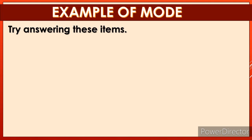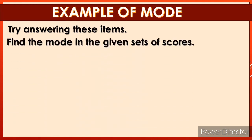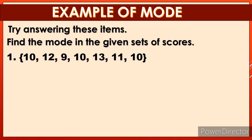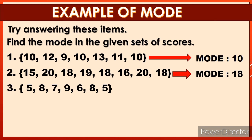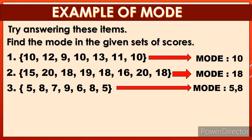Let's have example number 1. Find the mode in the given set of scores. Number 1: 10, 12, 9, 10, 13, 11, 10 — the mode is 10. Number 2: 15, 20, 18, 19, 18, 16, 20, 18 — the mode is 18. Number 3: 5, 8, 7, 9, 6, 8, 5 — the mode is 5 and 8.